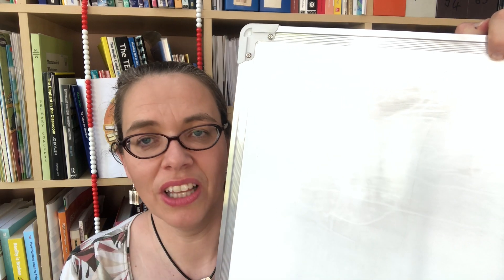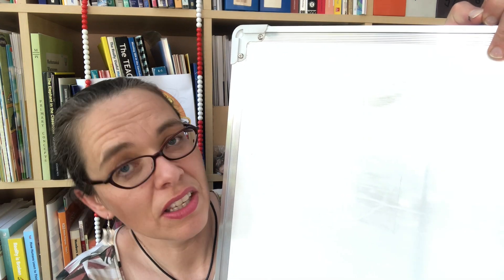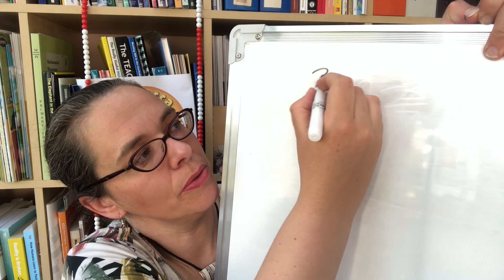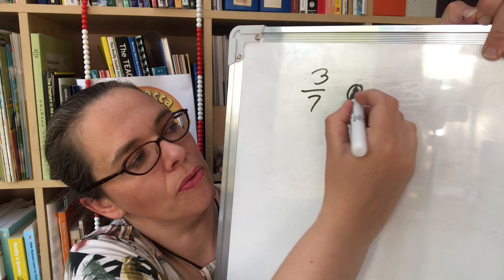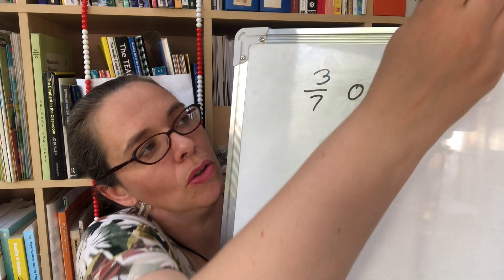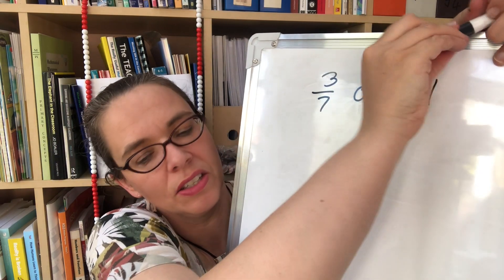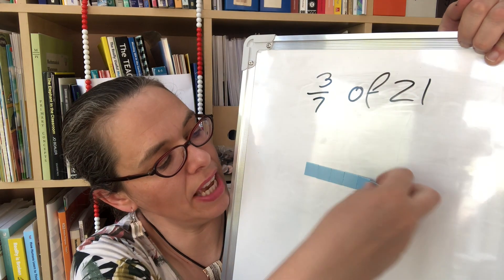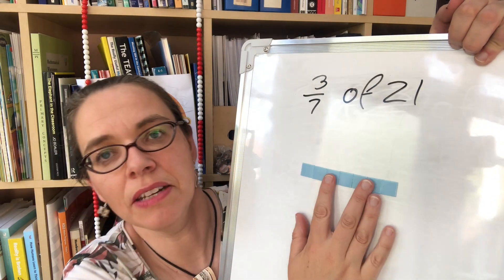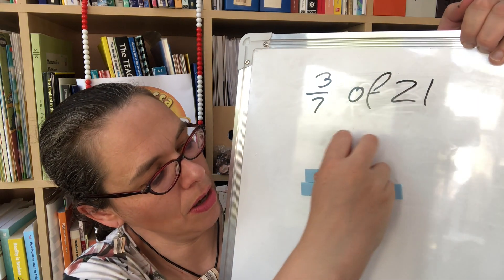The third model is array. That's organising objects as rectangles. So let's think about the same problem, three sevenths of 21. All we do is count out seven objects and organise them as a line. Your next seven go above them.